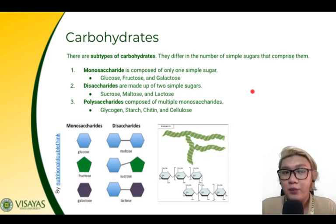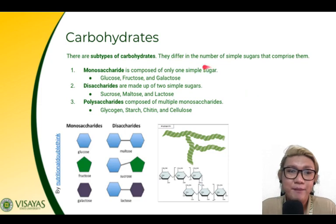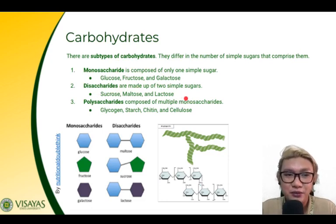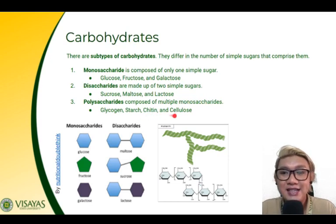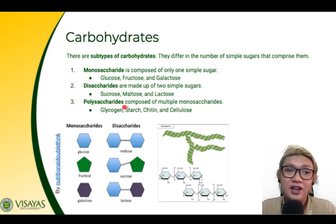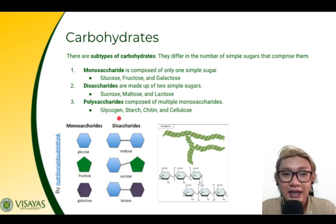Carbohydrates have different subtypes that differ in the number of simple sugars. Monosaccharides are composed of one simple sugar — examples are glucose, fructose, and galactose. Disaccharides are made up of two simple sugars — examples are sucrose, maltose, and lactose. Polysaccharides are composed of multiple monosaccharides — examples include glycogen, starch, chitin, and cellulose. Cellulose is the principal component of plant cell walls; chitin is found in the exoskeleton of arthropods and fungal cell walls; starch is a storage product in plants; and glycogen is the storage form of carbohydrate in animals.